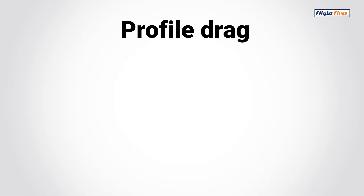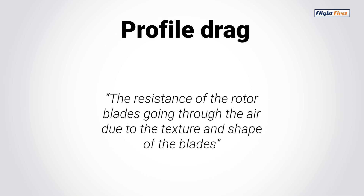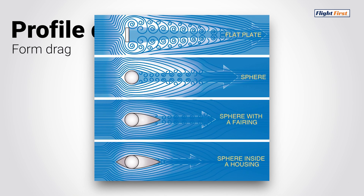Made up of form drag and skin friction, profile drag is the resistance of the rotor blades going through the air due to the texture of the blades as well as their shape. Form drag is the resistance caused by the air interacting with the frontal and rear areas of the rotor blades. A flat plate would experience more form drag than an airfoil would.